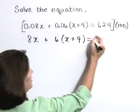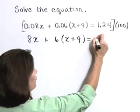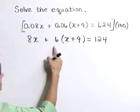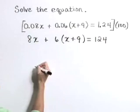And on the right-hand side, 100 times 1.24 is 124. So this looks a little bit easier to deal with. Now let's solve this resulting linear equation.